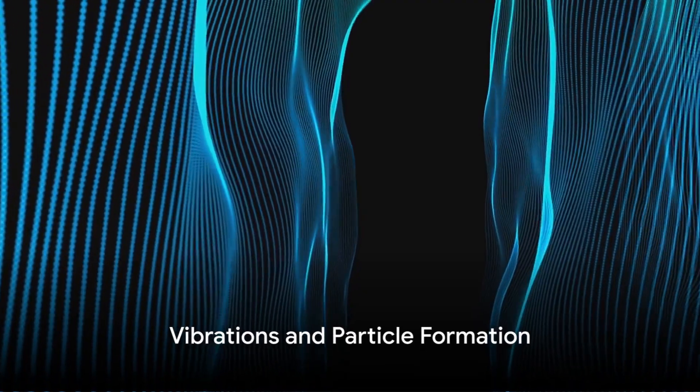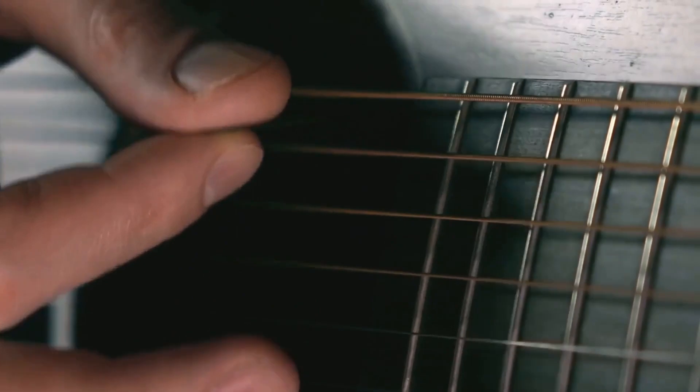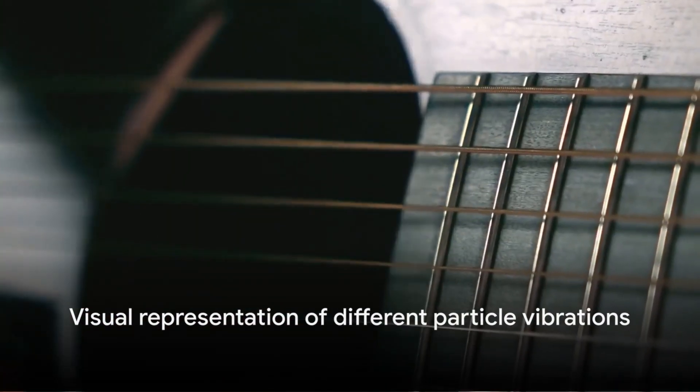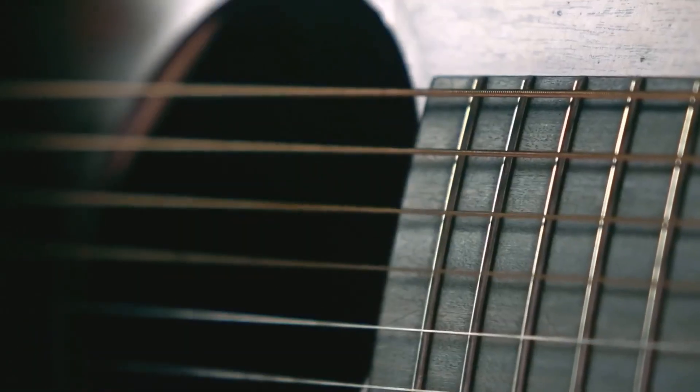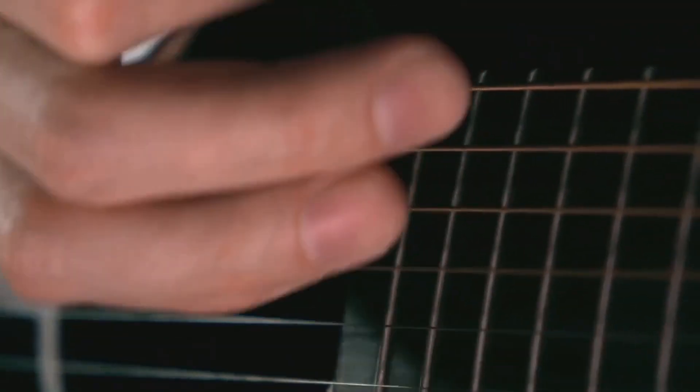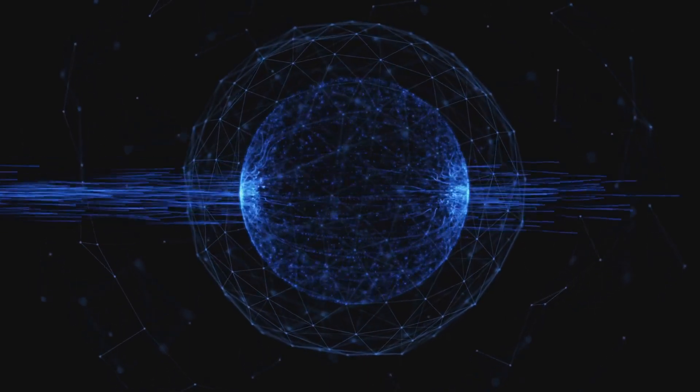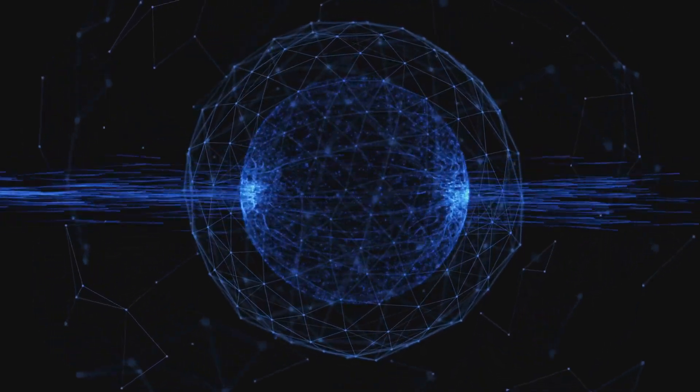Here's where it gets even more interesting. These tiny strings vibrate much like the strings on a musical instrument. And just as different vibrations on a guitar string produce different notes, different vibrations of these strings give rise to different particles. So an electron isn't just an electron, but a string vibrating at an electron frequency.